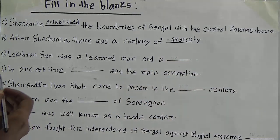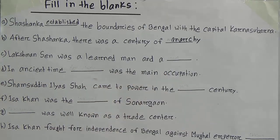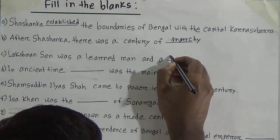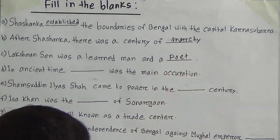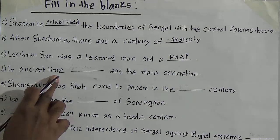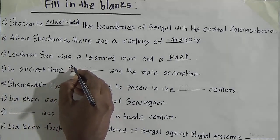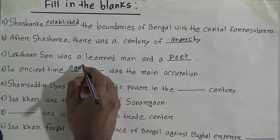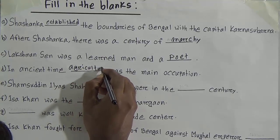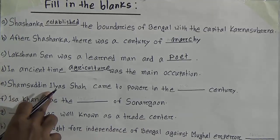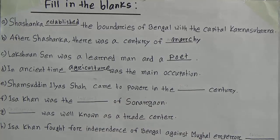C: Lakshman Sen was a learned man and a blank. Answer: Lakshman Sen was a learned man and a poet — P-O-E-T. D: In ancient times, blank was the main occupation. Answer: in ancient times, agriculture was the main occupation — A-G-R-I-C-U-L-T-U-R-E. E: Samsuddin Ilyasa came to power in the blank century. Answer: Samsuddin Ilyasa came to power in the 14th century.